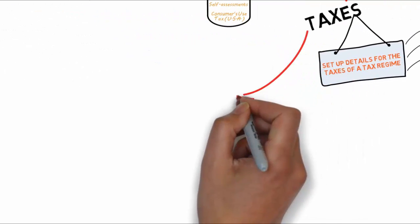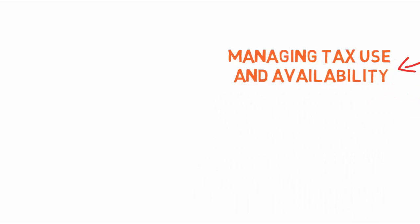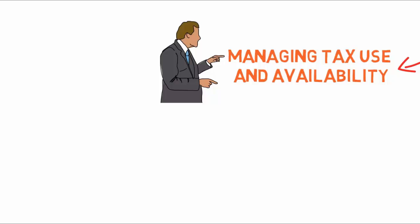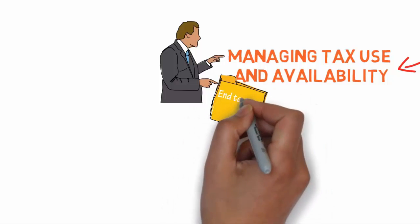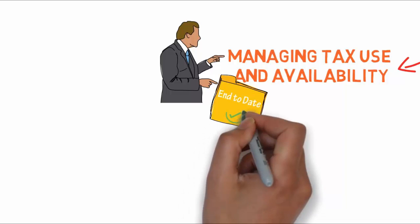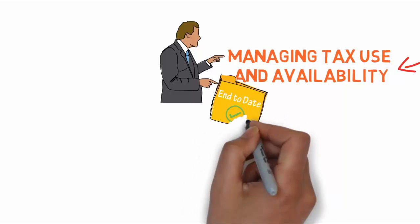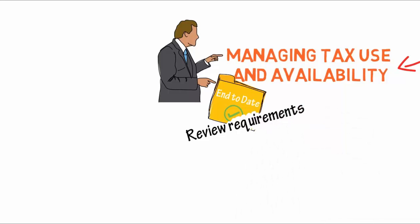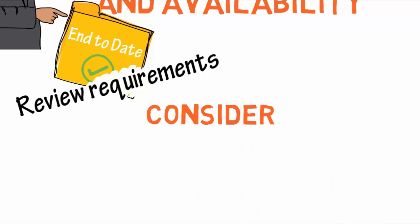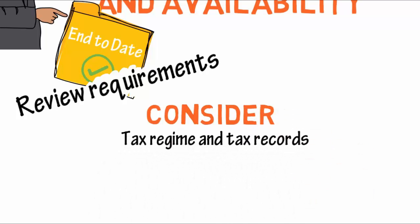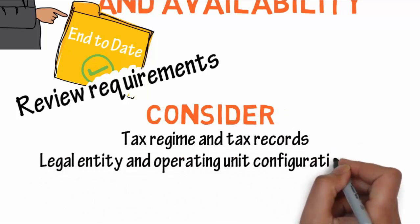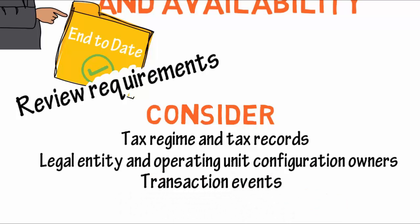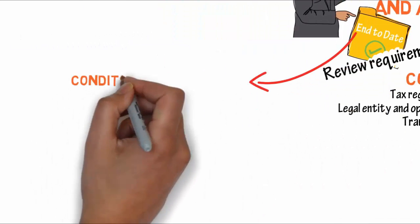Now let's talk about managing tax use and availability. You can manage the use and availability of the taxes in your tax regimes by applying an end date to the appropriate record or records. Before you apply end dates to records, first evaluate both your business's requirements and the requirements of the tax authority. You need to consider the tax regime and tax records, the legal entity and operating units, configuration owners, and in some cases, the transaction events.